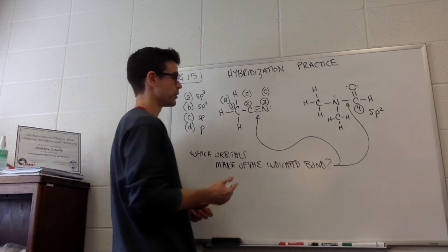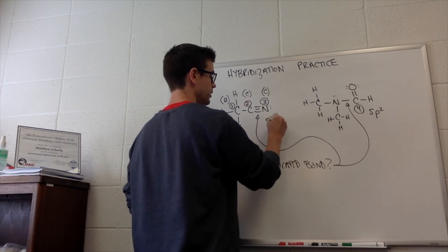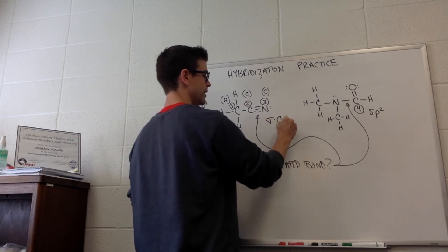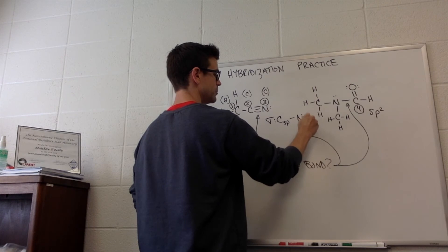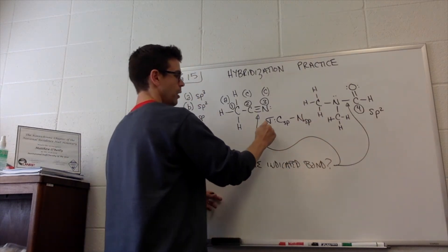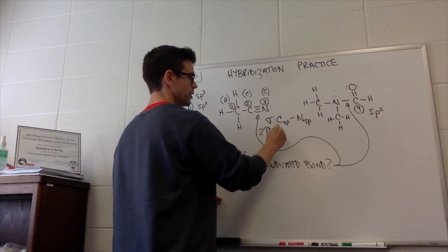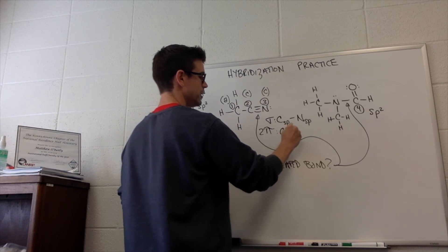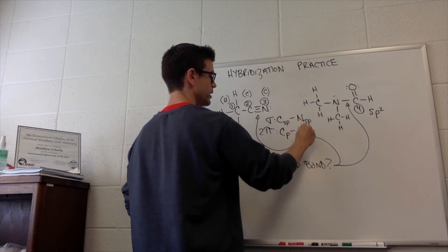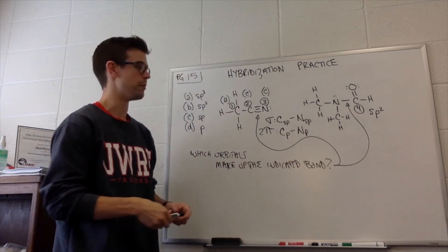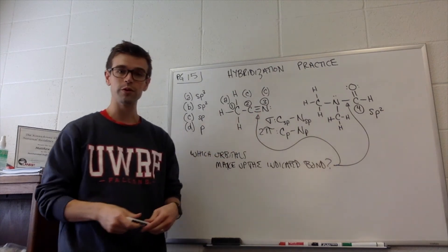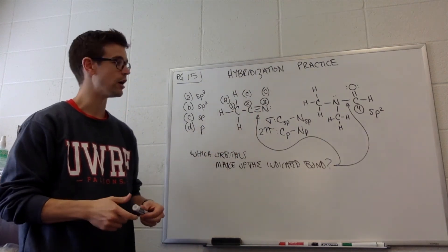So the sigma bond is going to be from a C-sp orbital to an N-sp orbital. The two different pi bonds are going to be made from a C-p to an N-p orbital. So there are a total of three orbitals making up that bond.